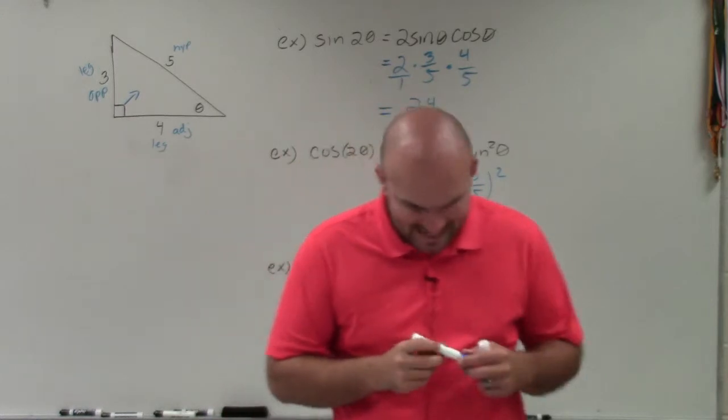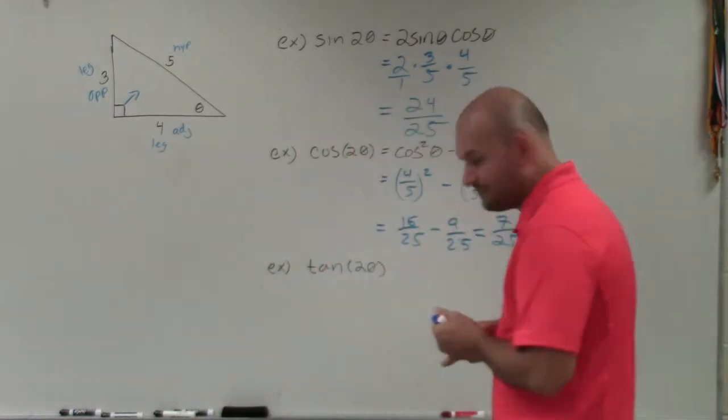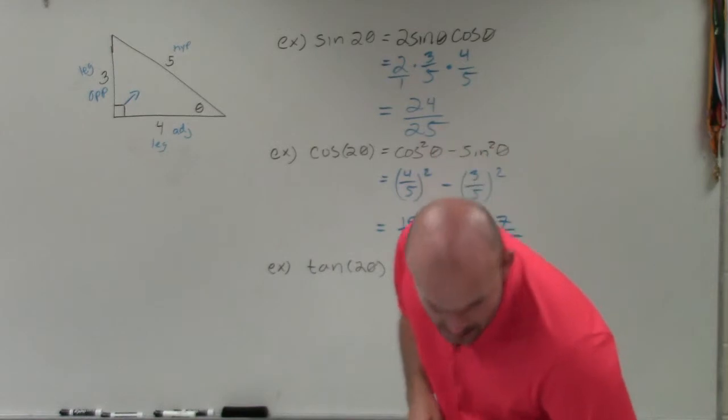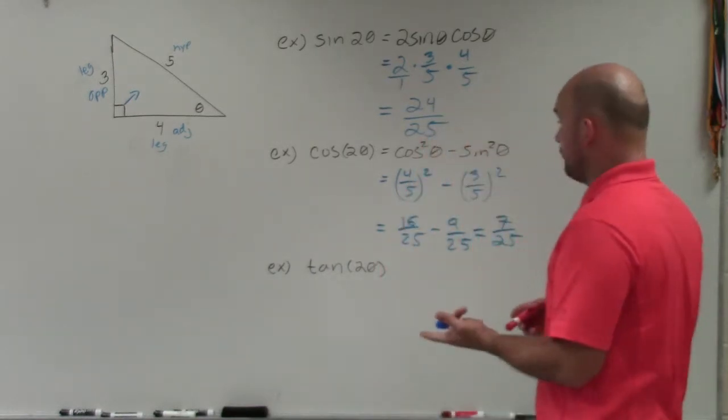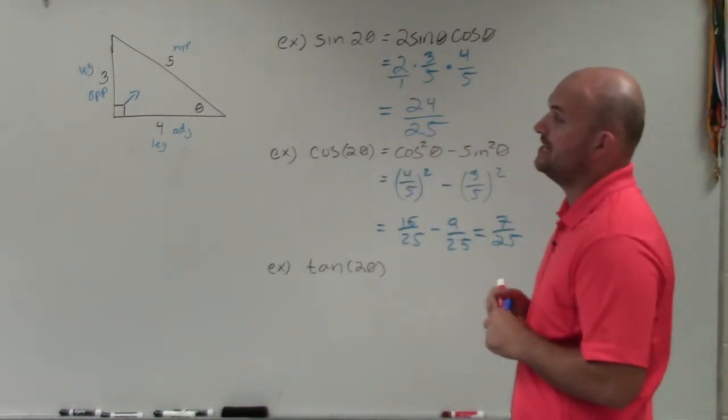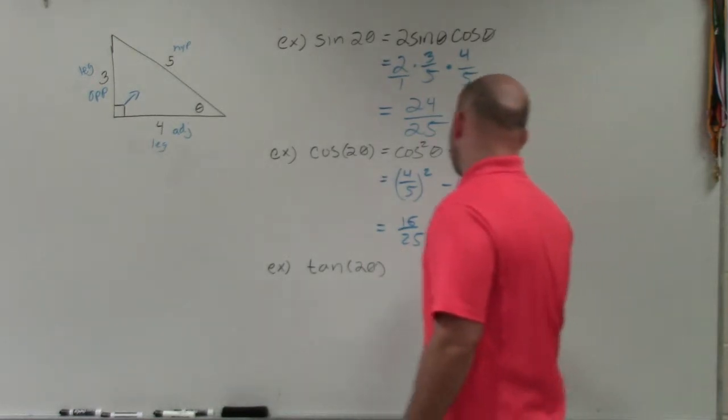Now I'll go ahead and look at tangent. The last one we're going to look at for tangent is going to be a different formula. And that formula is going to be 2 tangent of theta divided by 1 minus tangent squared of theta.